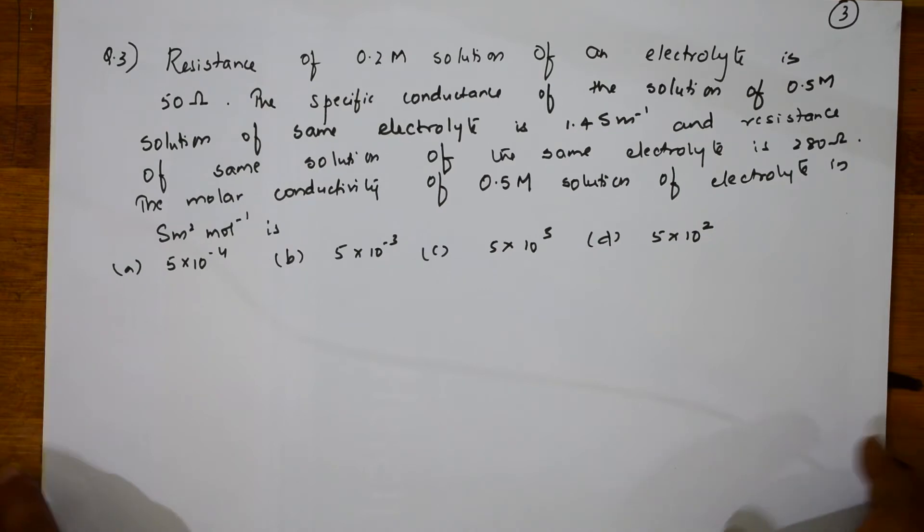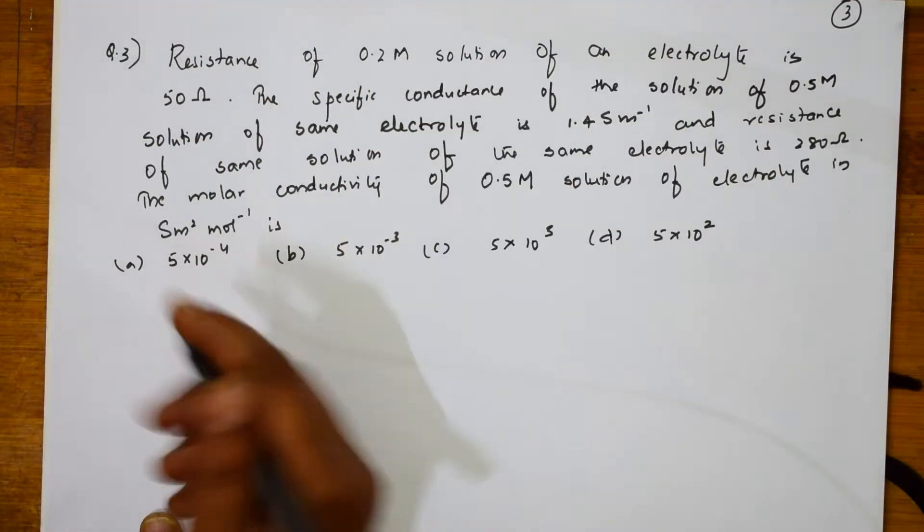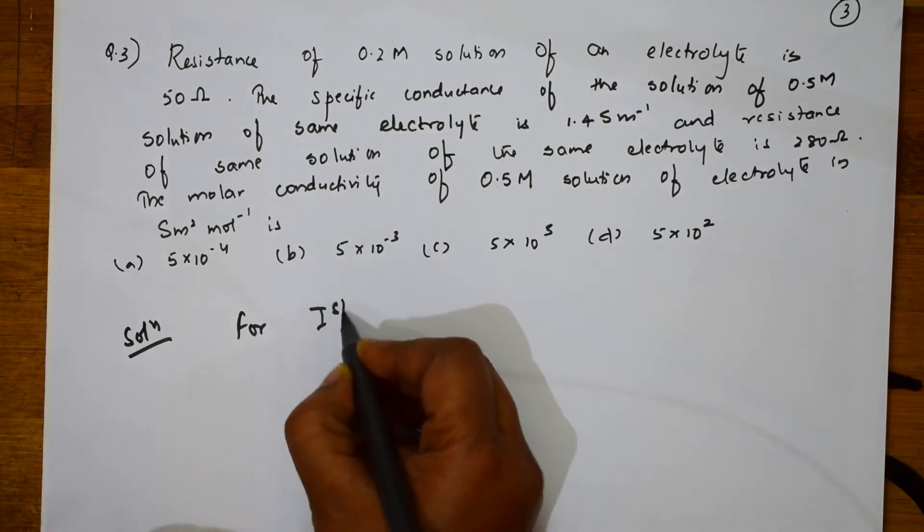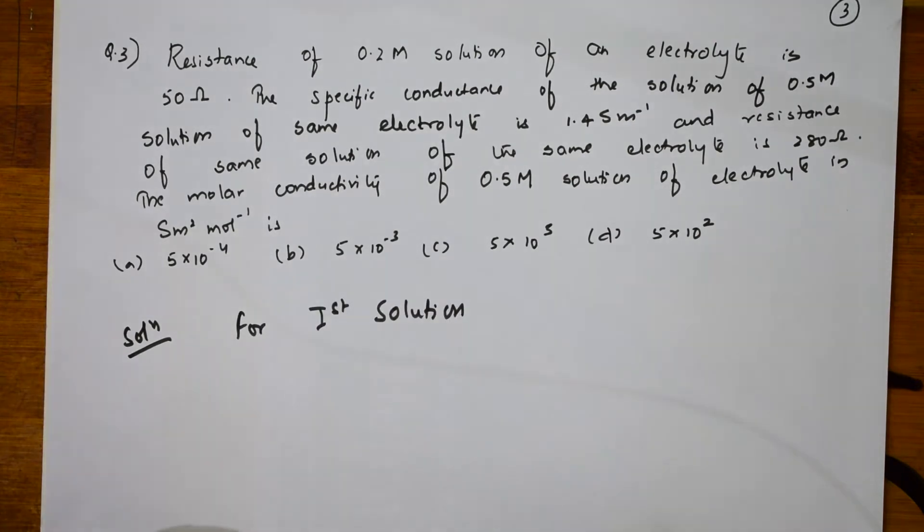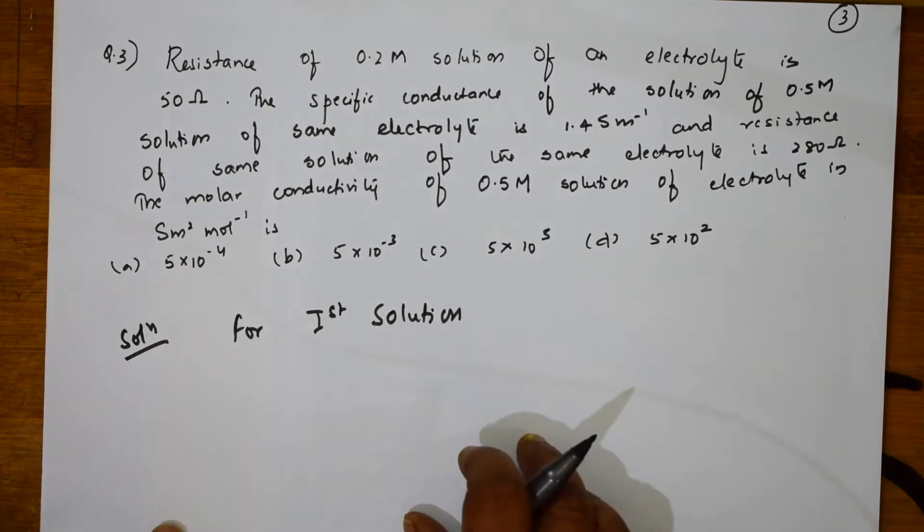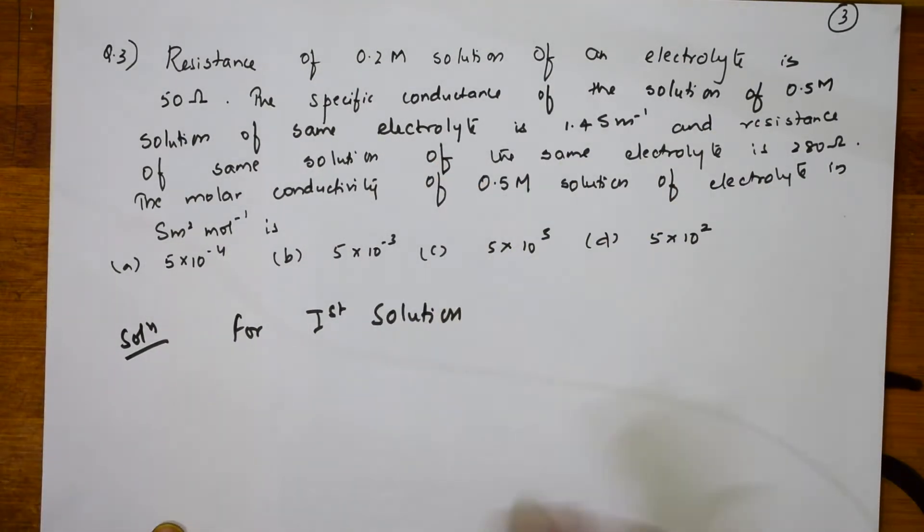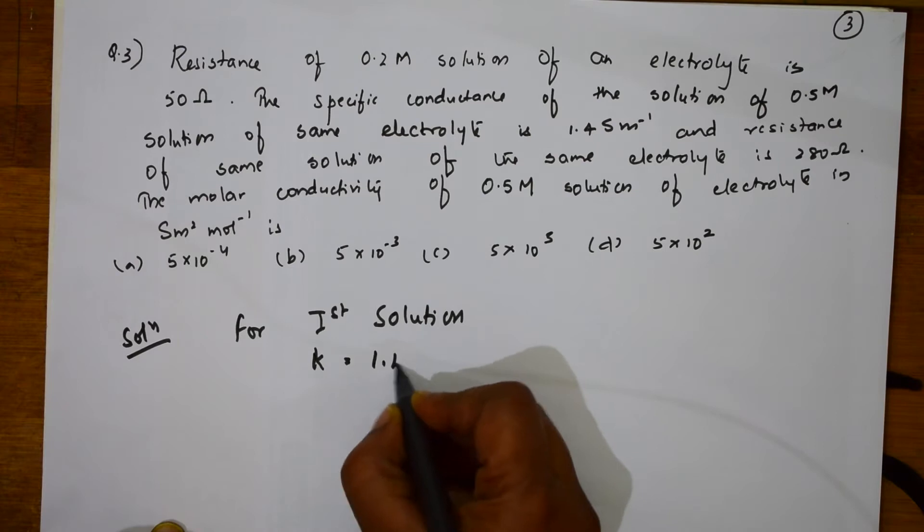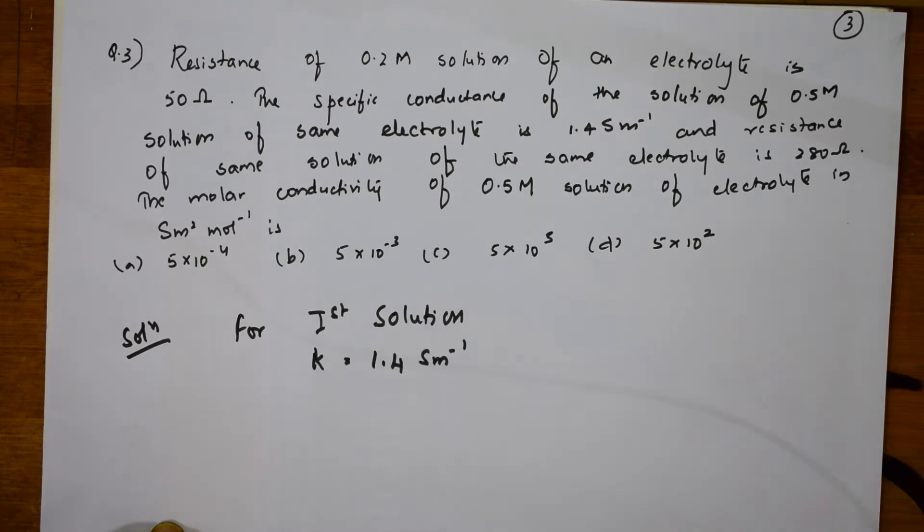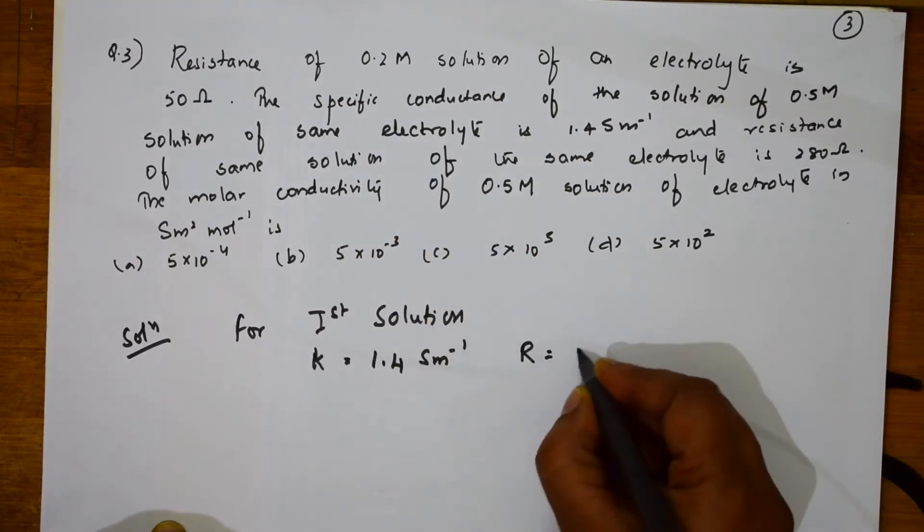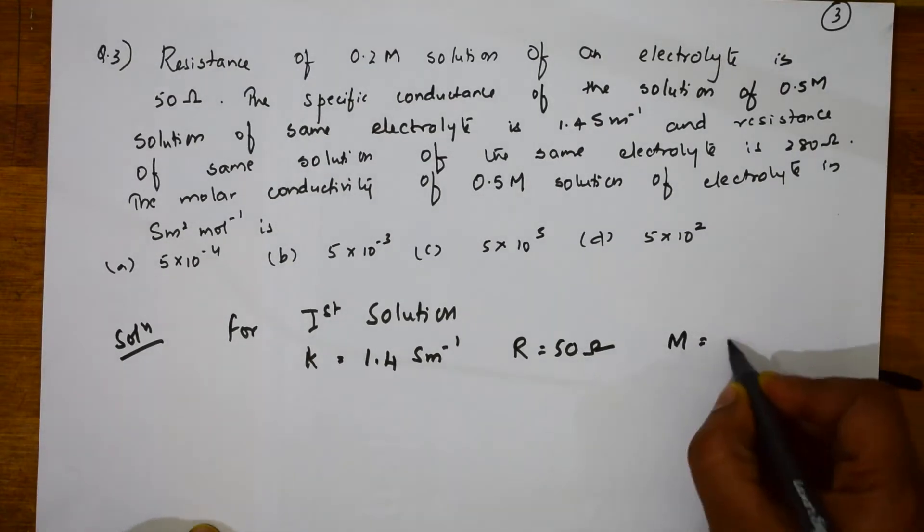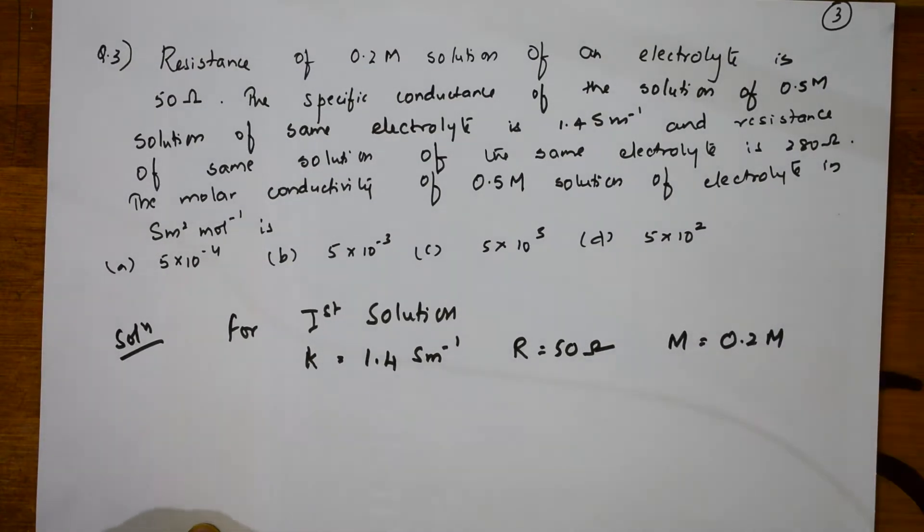Now, let us start with the first thing. Let us take the first solution. Let us solve this. So, for first solution, let us write the data which is given to us. What do they give us? K value they have given to me. Kappa given to me is 1.4 S/m. Resistance, capital R given to me is 50 ohms. And after that, concentration is 0.2 molar. Done.